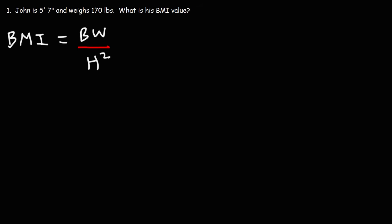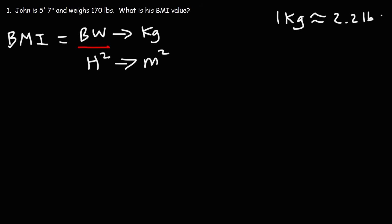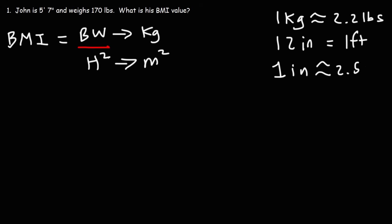You have to pay attention to the units in order to do this problem correctly. The body weight has to be in kilograms, and the height has to be in meters. There are some conversion factors we're going to use: one kilogram is approximately 2.2 pounds, there are 12 inches in a foot, 1 inch is approximately 2.54 centimeters, and 1 meter is equal to 100 centimeters.